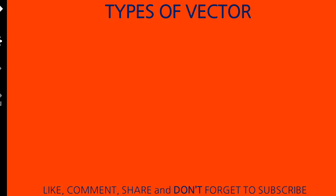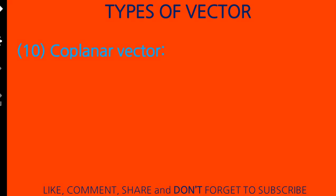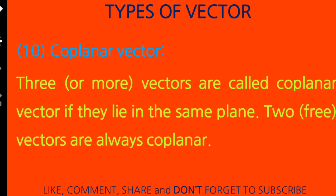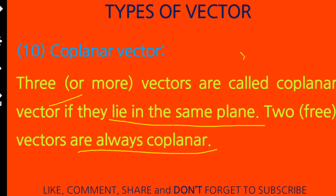The tenth and last type is coplanar vectors. Three or more vectors are called coplanar vectors if they lie in the same plane. Two free vectors are always coplanar, but three or more vectors are called coplanar vectors when they lie in the same plane.